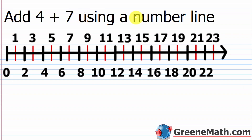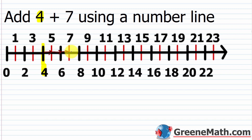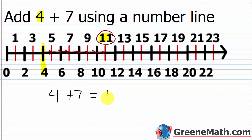Now we want to add four plus seven using a number line. I have a number line that's a little bit larger and more crowded, but we can still find everything. We're going to start at the leftmost number — the four — right here. Then we're adding seven, so we're going to move seven places to the right. Each notch is increased by one: one, two, three, four, five, six, seven. That puts us right here at 11. We all know that four plus seven is 11 — it's just to get the practice. So four plus seven equals 11.